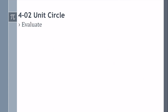Let's try some more. Secant of 4 pi over 3 — that's right there on the unit circle. The coordinate is negative 1 half, negative square root of 3 over 2. Secant is 1 over x, so that would be 1 over negative 1 half, which is negative 2.